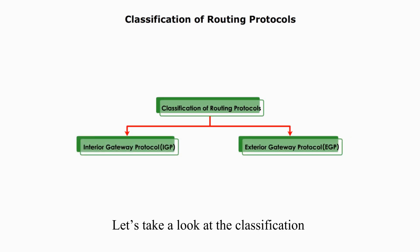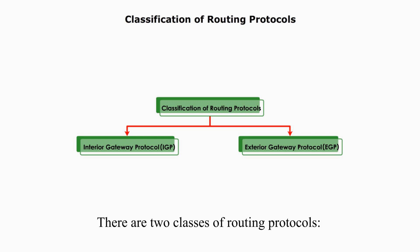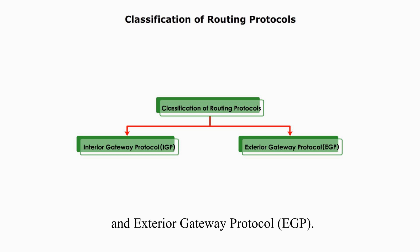Now let's take a look at the classification of dynamic routing protocols. There are two classes, or two categories, of routing protocols: Interior Gateway Protocol, IGP, and Exterior Gateway Protocol, EGP.